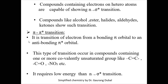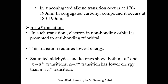Pi to pi star (π→π*) transition is the transition of an electron from a bonding pi orbital to an anti-bonding pi star orbital. A lone pair is not required, but a double bond or multiple bond must be present, because pi electrons are always in double and triple bonds. This transition occurs in compounds containing unsaturation like double bonds, triple bonds — for example, alkenes, carbonyls, nitro groups. It requires lower energy than the n→σ* transition, occurring at 170–190 nanometers in conjugated systems.